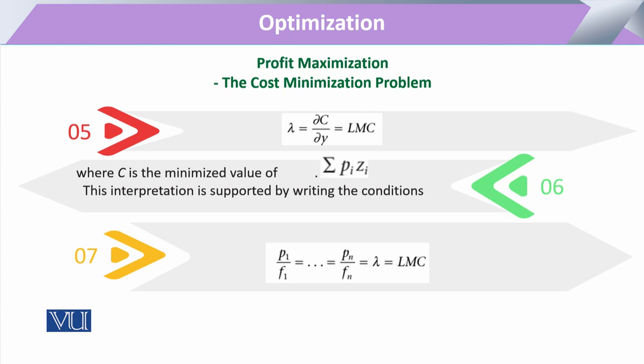This is the lambda. This is basically the change in cost. The change in cost is basically the marginal cost per unit. When we say this lambda, the change in cost due to output, is marginal cost and long-run marginal cost.